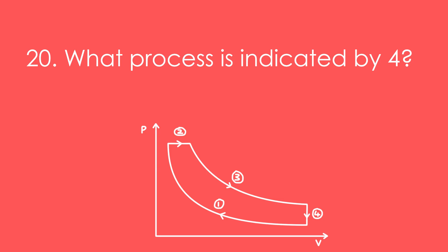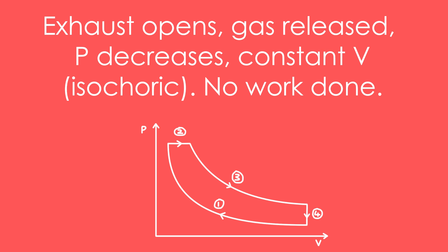Question 20: What process is indicated by 4? That's when the exhaust opens and some of the gas is released. Pressure decreases but at a constant volume. No work is done because there's no area under the graph with that line. The exhaust and intake strokes are not drawn on this cycle.